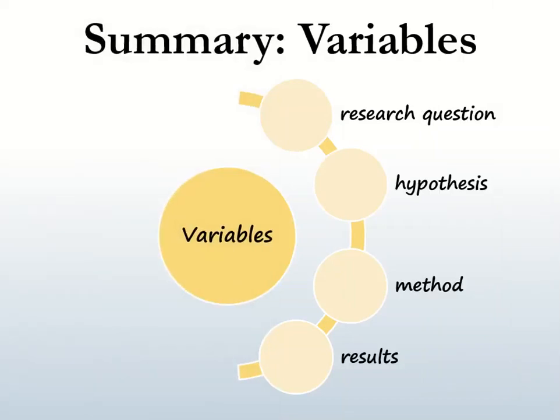To summarize, variables appear in the research question, hypothesis, method, results, and conclusion of your research — like a golden thread running throughout your research, guiding you and keeping you focused.